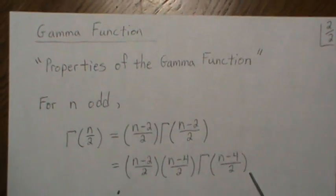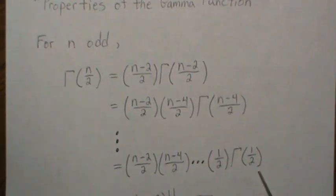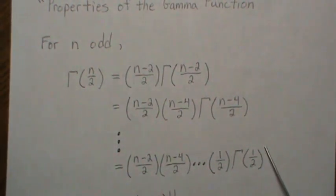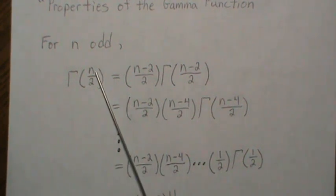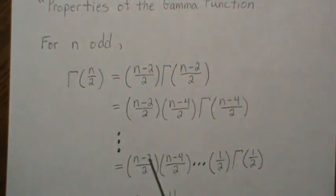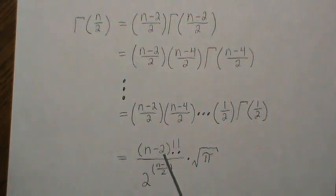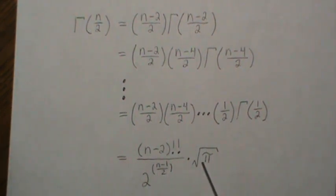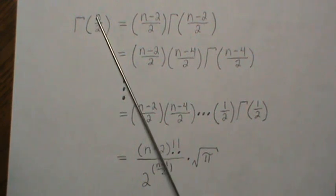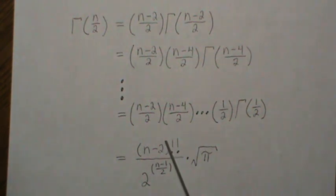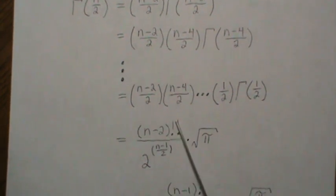We keep applying this reduction relationship, going down step by step, until we end up with gamma of one half. We stop there because gamma of one half equals the square root of pi. Looking at the product of all those terms, the numerators form a double factorial: n minus two double factorial, and we have a product of twos in the denominator, giving two raised to (n minus one)/2. So gamma of n over two equals n minus two double factorial divided by two raised to (n minus one)/2, times the square root of pi.